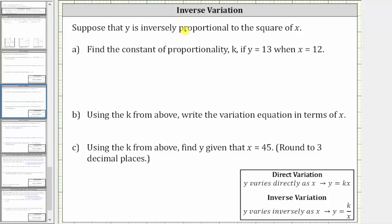Looking at the notes below, if we are told that y varies inversely as x, we use the equation y equals k divided by x, where k is the constant of proportionality. But notice in our case, we're told that y is inversely proportional to the square of x, not just x.